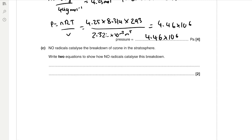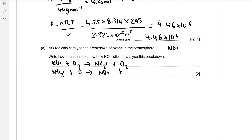NO radicals catalyse the breakdown of ozone in the stratosphere. Write two equations showing the propagation steps. NO• reacts with O₃ to form NO₂• and O₂, then NO₂• reacts with O• to regenerate NO• and O₂. The overall equation is O₃ + O → 2O₂ when the NO and NO₂ terms cancel, confirming NO acts as a catalyst.